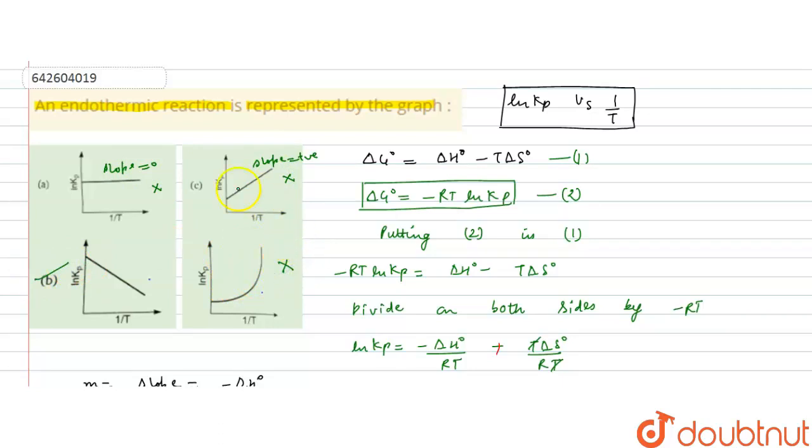So for endothermic reaction, ln Kp versus 1 by T has a negative slope with this intercept. So this graph is the correct graph for endothermic reaction. B option is the correct answer. I hope you understood the solution. Thank you.